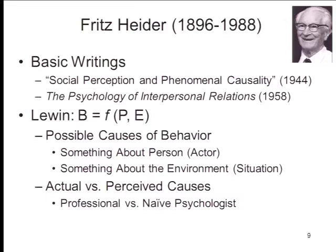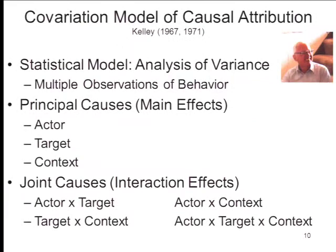Given this basic formula — behavior as a function of person and environment — a whole tradition in social psychology grew up around this, generating a model, even a calculus, for assigning causality to social events. The person responsible for this very popular model is Harold Kelley, long-time professor at UCLA. He based his ideas about how ordinary people make causal attributions on the statistical methods that professional scientists use — specifically, the analysis of variance.